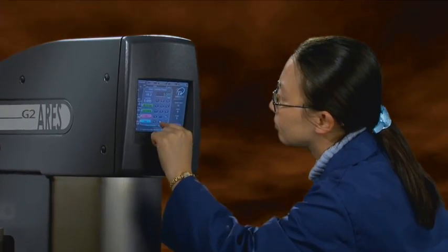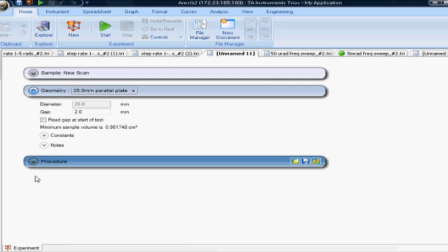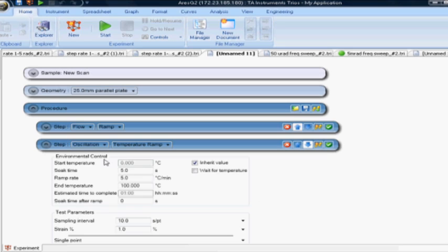Harnessing the power of the new ARES G2 requires equally powerful new software. Trios is an intuitive software interface offering an unprecedented level of testing freedom.